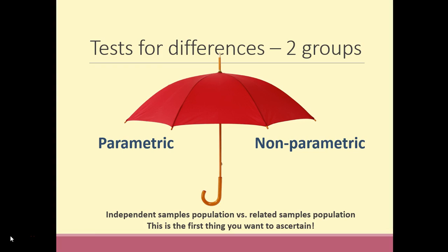As mentioned in the last video, there are parametric tests and non-parametric equivalents to compare two groups of sample data. To complicate things a little further, there are tests to compare differences from independent samples and tests to compare differences from related samples. The first thing you want to ascertain from your dataset is whether the data come from independent or related sample populations.